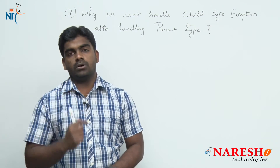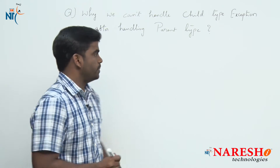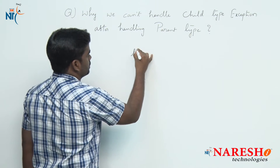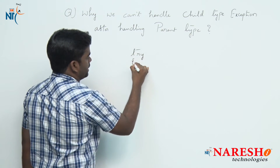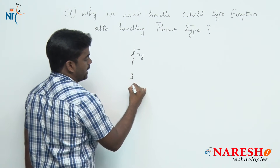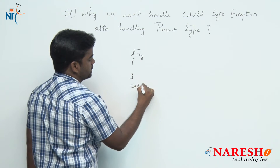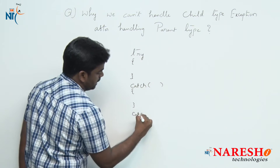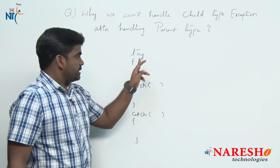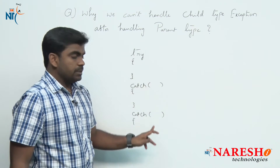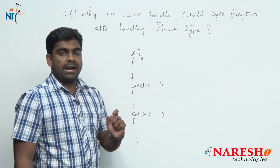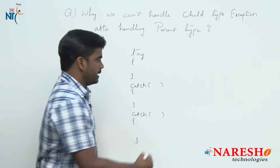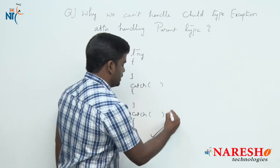To understand this, we should know one concept: one try block can handle N number of catch blocks — that is, one try block can have multiple catch blocks to handle different types of exceptions. This is allowed in Java.